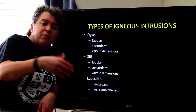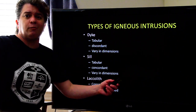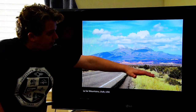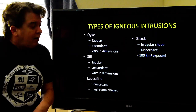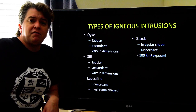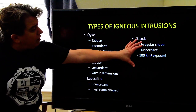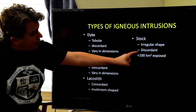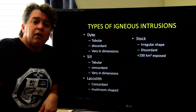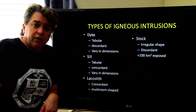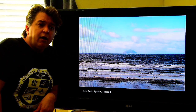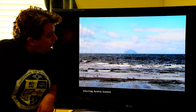Sometimes an igneous intrusion just has a random shape — it doesn't look like anything at all. If you have an igneous intrusion with a random irregular shape that is discordant, we call it a stock. It cuts across the country rock, and at the surface there's going to be less than 100 square kilometers of it exposed.